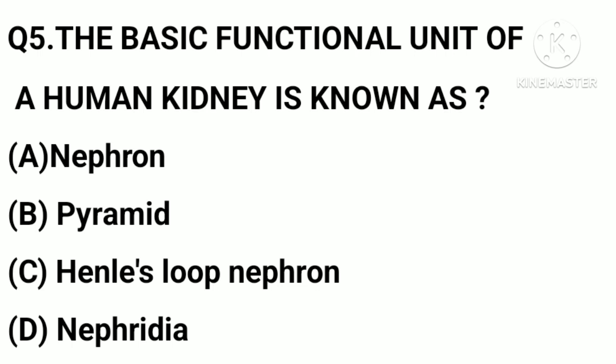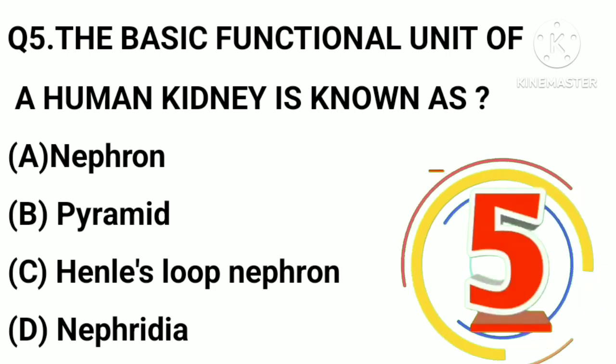The basic functional unit of a human kidney is known as: option A, nephron; B, pyramid; C, Henle's loop; D, nephridia.